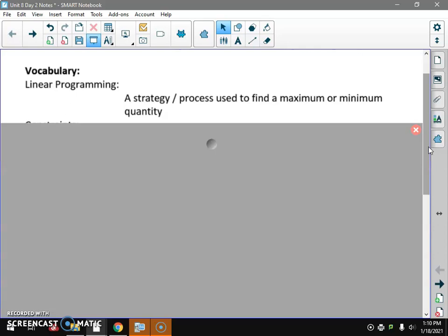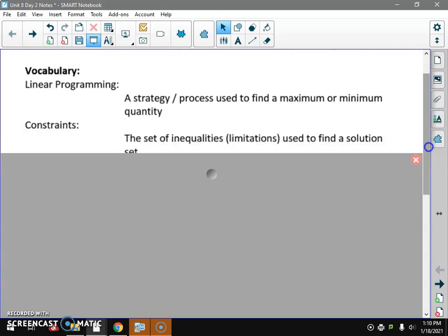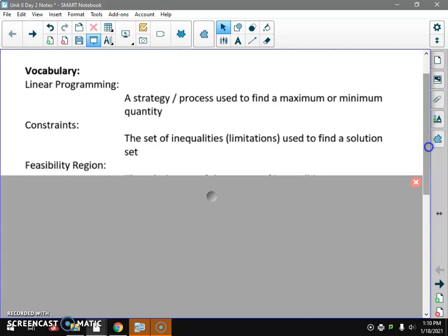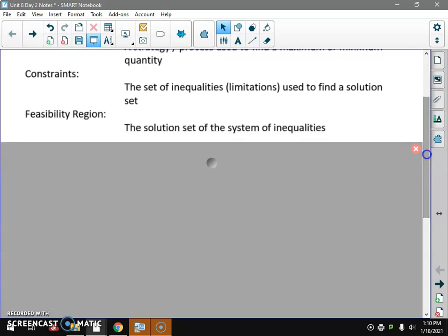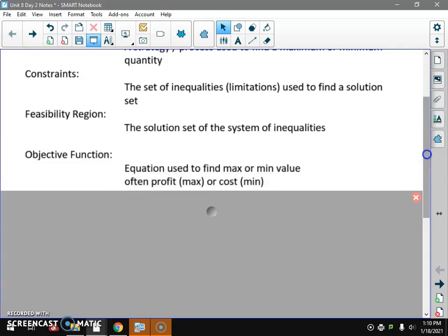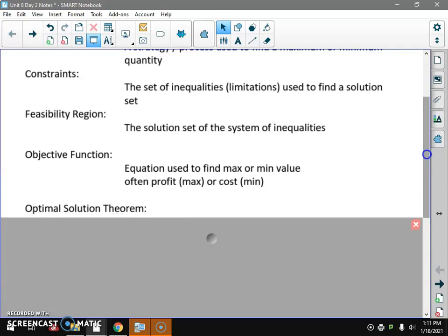Let's go through some terms real quick. Linear programming is a strategy or process used to find maximized or minimized quantities. Often profits are maximized, costs are minimized. Constraints or limitations are the set of inequalities used to find the solution set, the multiple shaded region. Feasibility region is the fancy name for that solution set of the system of inequalities.